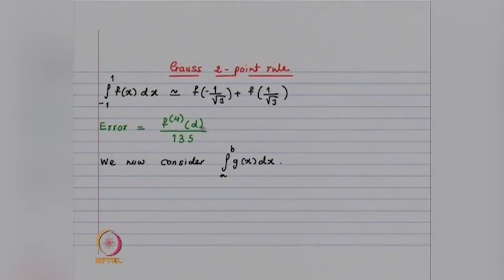The error term contains the fourth derivative. So if the fourth derivative is identically zero — which is the case when f is a cubic polynomial — the error is zero. We have only two function evaluations and the formula is exact for cubic polynomials. By comparison, the trapezoidal rule also uses two points (the endpoints a and b), but is exact only for polynomials of degree ≤ 1. This is the advantage of the Gaussian rule.